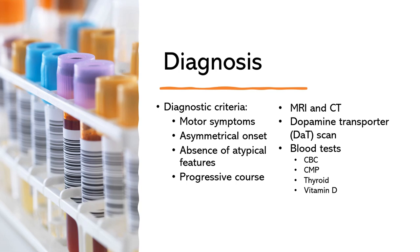CT scans can provide detailed images of the brain's structures and can help identify any structural abnormalities such as tumors, hemorrhages, or other lesions. CT scans are particularly useful in ruling out other possible causes in emergency situations where a rapid assessment is needed. Remember, there are no specific imaging findings that can confirm or definitively diagnose Parkinson's disease. A dopamine transporter, or DAT, is a type of nuclear medicine imaging that can help assess the dopamine transporter levels in the brain.